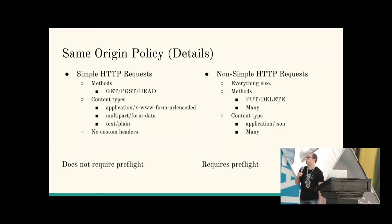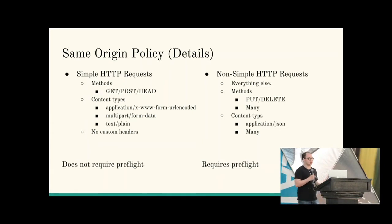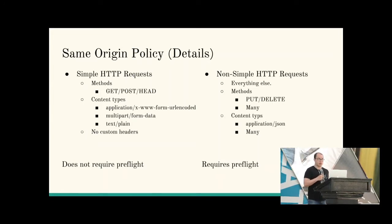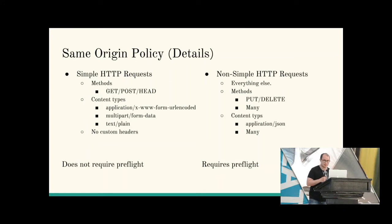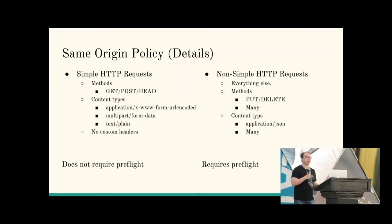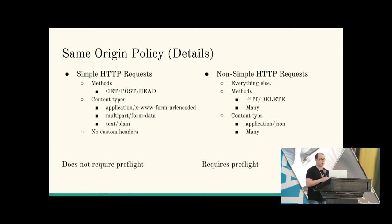The difference between those two with regards to the same origin policy is: a simple request — if you visit Facebook and they send you JavaScript — that JavaScript can force your browser to make a credentialed request to Google. Non-simple requests require validation ahead of time via a preflight OPTIONS request that asks the server if the request is allowed, and the server responds yes or no. These rules dictate which cross-origin requests are permitted.